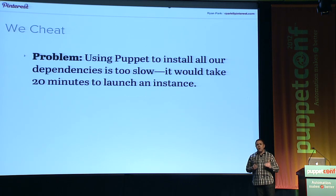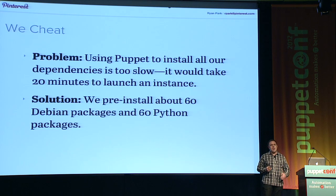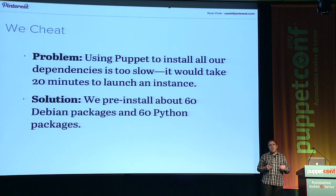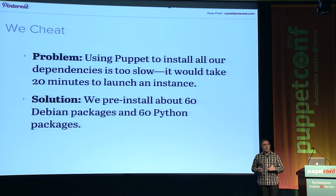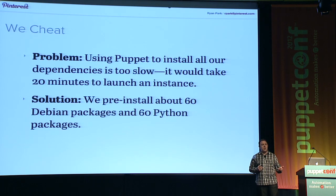We do cheat a bit because it would take about 20 minutes to bring up an instance if we started with a purely basic AMI. So we install about 60 Debian packages and about 60 Python packages when we create this AMI. The key thing we keep in mind is that everything we pre-install, we also make sure is listed in our Puppet manifest — that way Puppet can ensure the server looks like it's supposed to, even if someone has accidentally or intentionally changed something later.